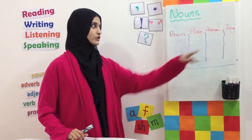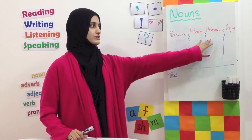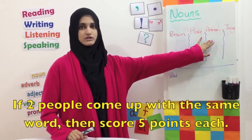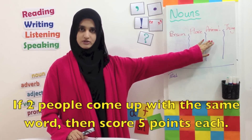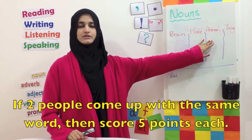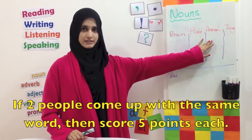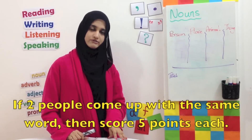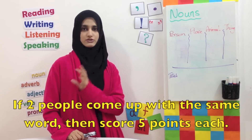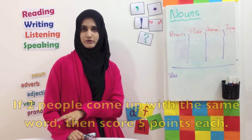For example, you have written mouse and your friend also wrote mouse. So instead of giving 10 each, you are going to give yourself 5 and your friend will get 5 points.